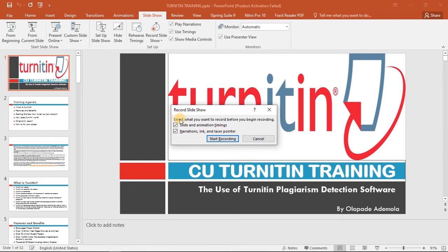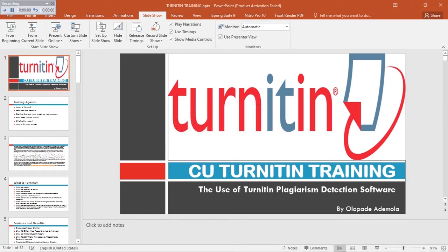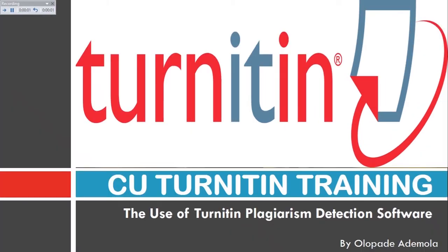Then it's going to ask us what we want to include in this narration that we're about to record: slide and animation timings, narration, ink, and laser pointer. We want to include everything, so we click on Start Recording.